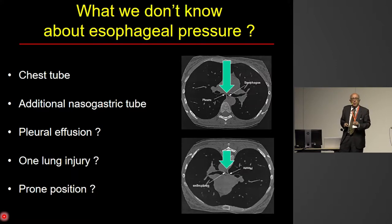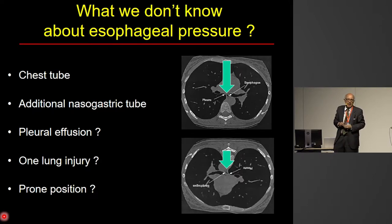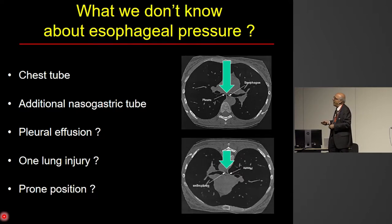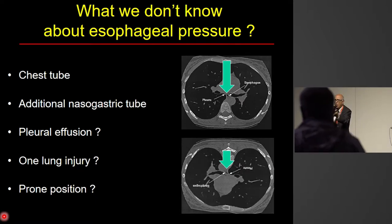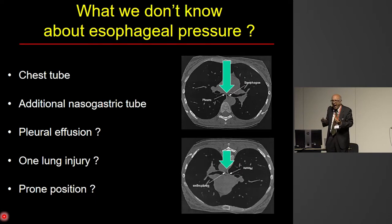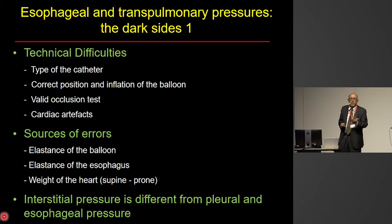There are conditions in which we really do not know if esophageal pressure gives an accurate measurement — for example, when you have a chest tube, or an additional nasogastric tube (which we now prefer to use with balloons incorporated), when we have pleural effusion, one-lung injury, or in prone position. In prone position you completely change the weight on the esophageal balloon, which is much greater in supine than in prone position. So how reliable is the measurement of esophageal pressure in these situations?